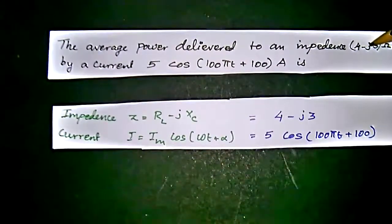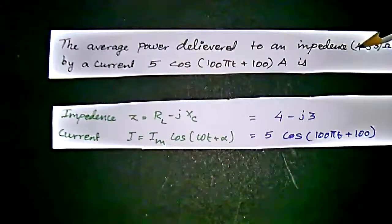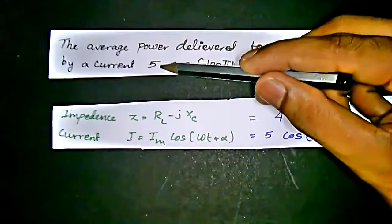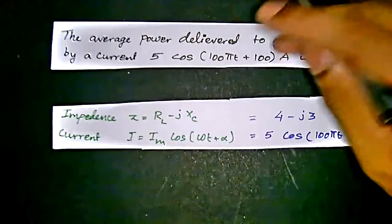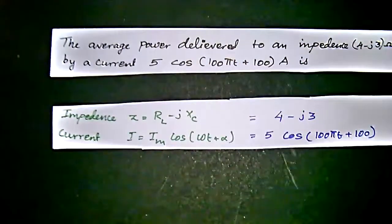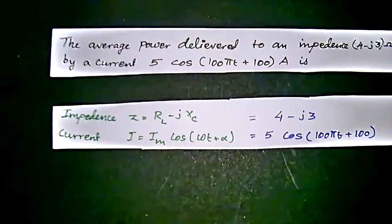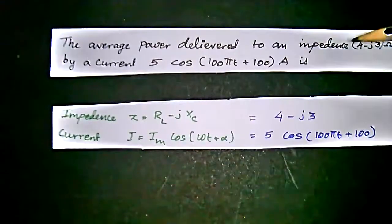So that is capacitance value here and resistance value here, and Im value the maximum current value here, and that is we can say that RMS value also. This cos πt is the ratio, that is the fluctuation that happens to the current while the time changes.